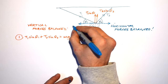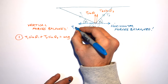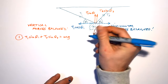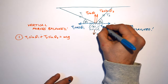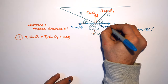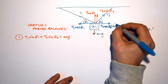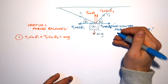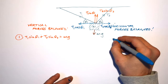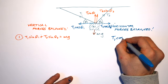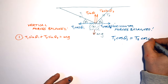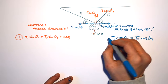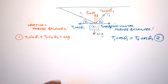The horizontal component of T1 is T1 cos θ1 — turning through the angle, so we use cos. The horizontal component of T2 is T2 cos θ2, for the same reason. Setting these equal to each other gives equation 2: T1 cos θ1 = T2 cos θ2.